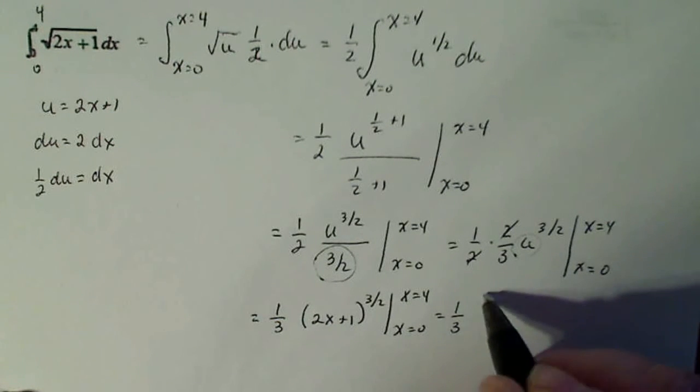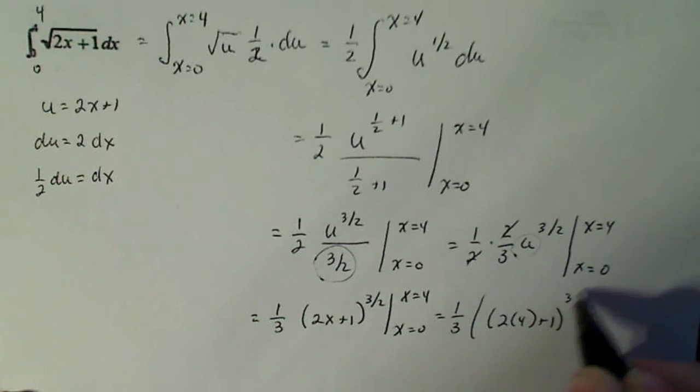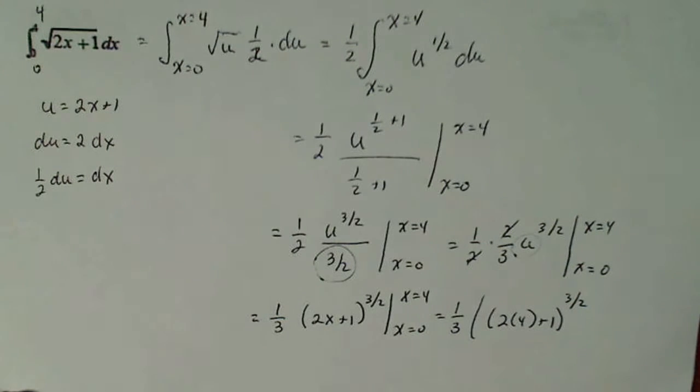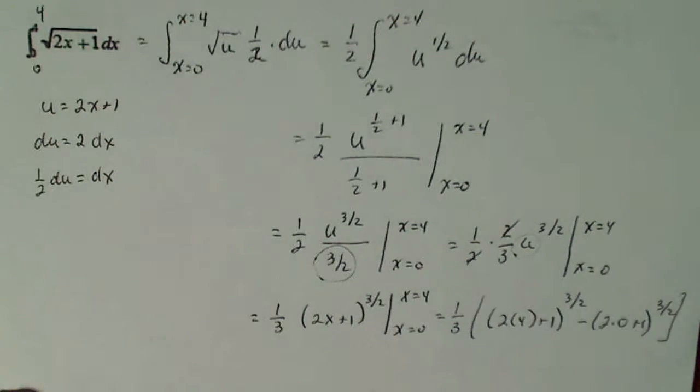I have one third of 2 times 4 plus 1 to the three halves minus 2 times 0 plus 1 to the three halves. Slide this up a little bit.